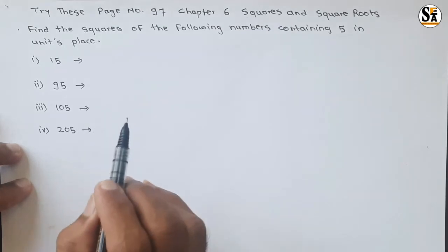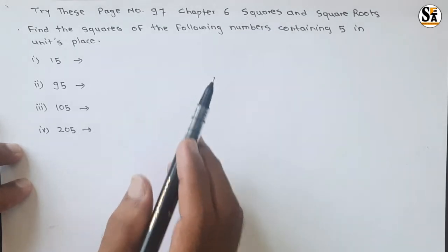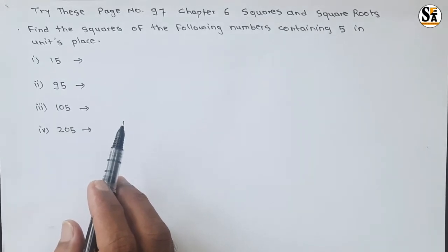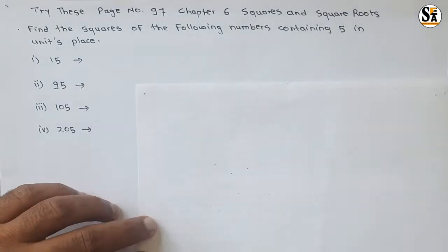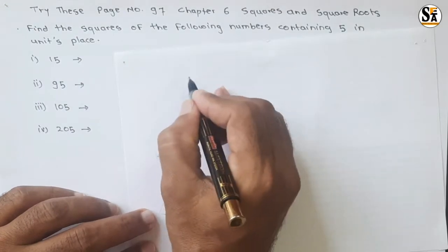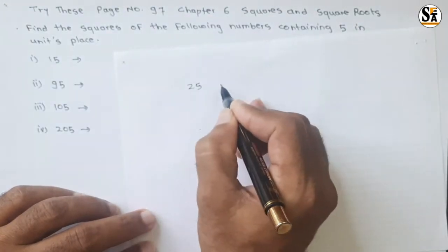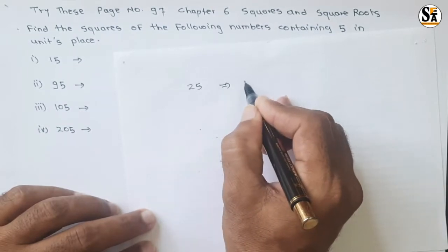There is a pattern for the squares if the number's unit place is 5. If we consider any number for the pattern, suppose we have a number 25, we know the square of 25 is 625.